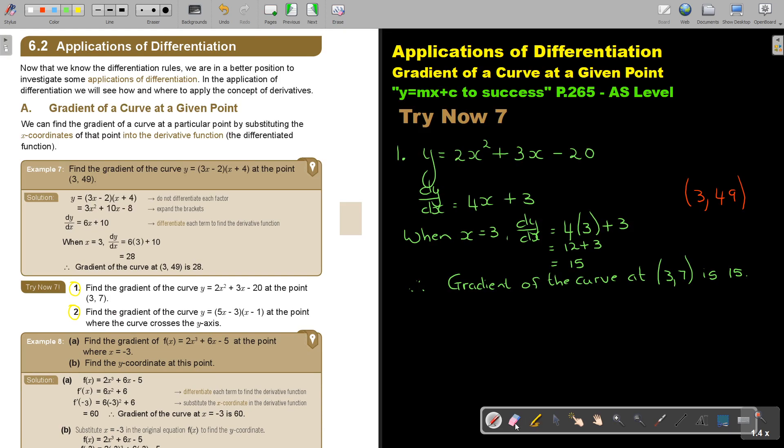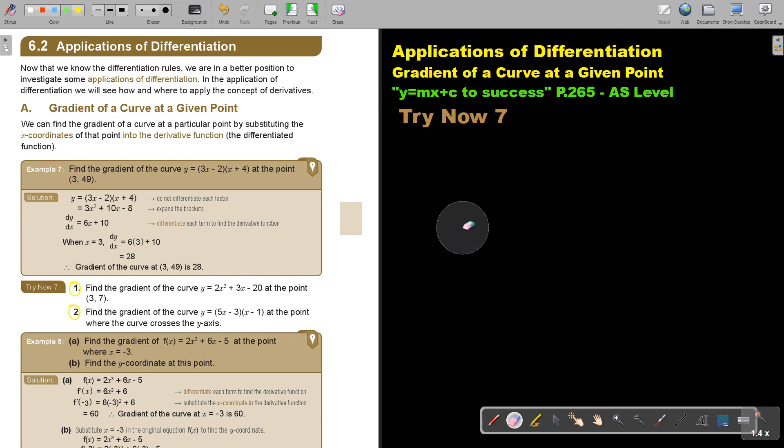Find the gradient of the curve. Now this is almost like the example. So don't forget to multiply out the brackets. So if I multiply it out. Now I am going to differentiate. Don't forget to indicate that. And that is going to give me 10x minus 8.